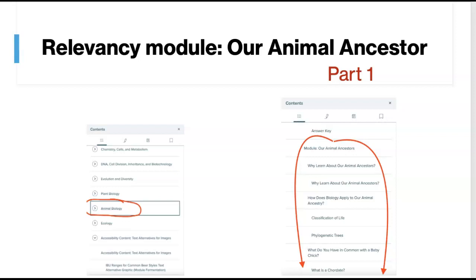So what we're going to talk about in this module is our animal ancestor. What animals were here before humans, before lots of other animals, that gave rise to the diversity of the animals we see today?